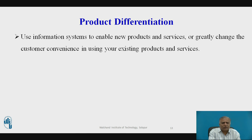Product differentiation: use information systems to enable new products and services, or greatly change the customer experience in using existing products and services. For example, Google continuously introduces new and unique search services on its website, such as Google Maps. By purchasing PayPal, an electronic payments system, in 2003, eBay made it much easier for customers to pay sellers and expanded use of its auction marketplace. Apple created the iPod as a unique portable digital music player plus a unique online web music service, and has continued to innovate with its multimedia iPhone, iPad tablet, and iPod video player.